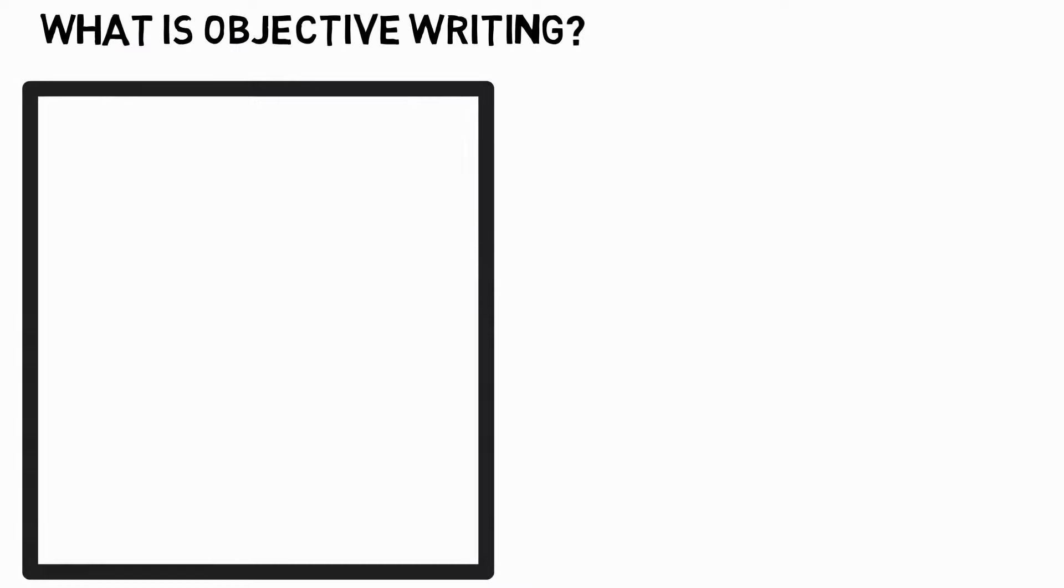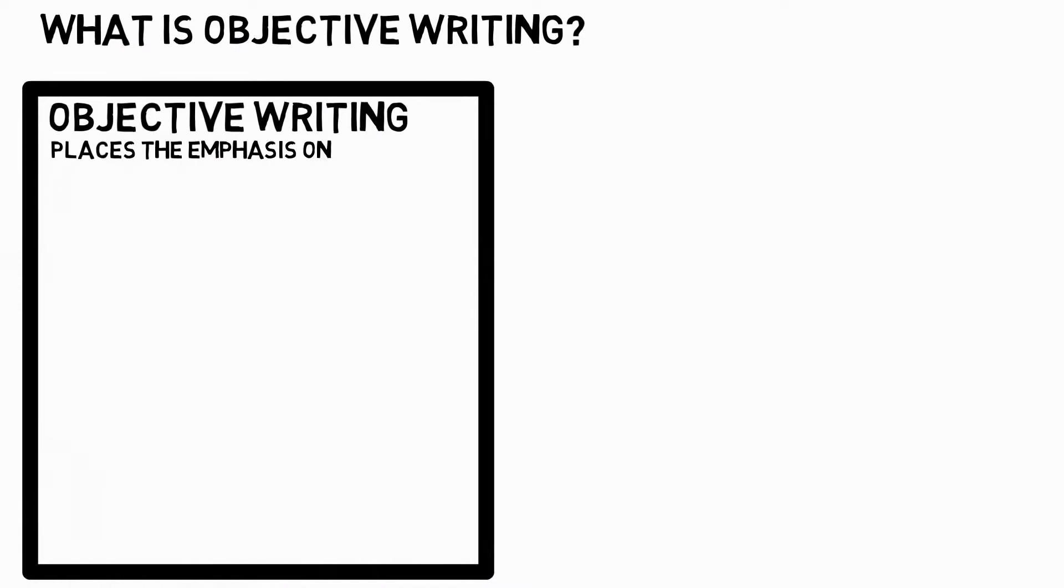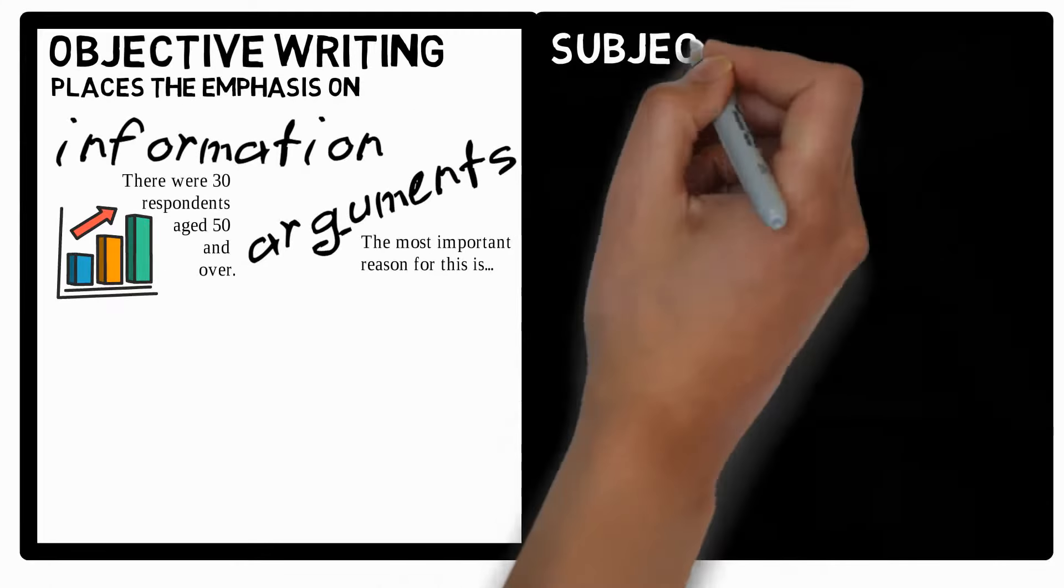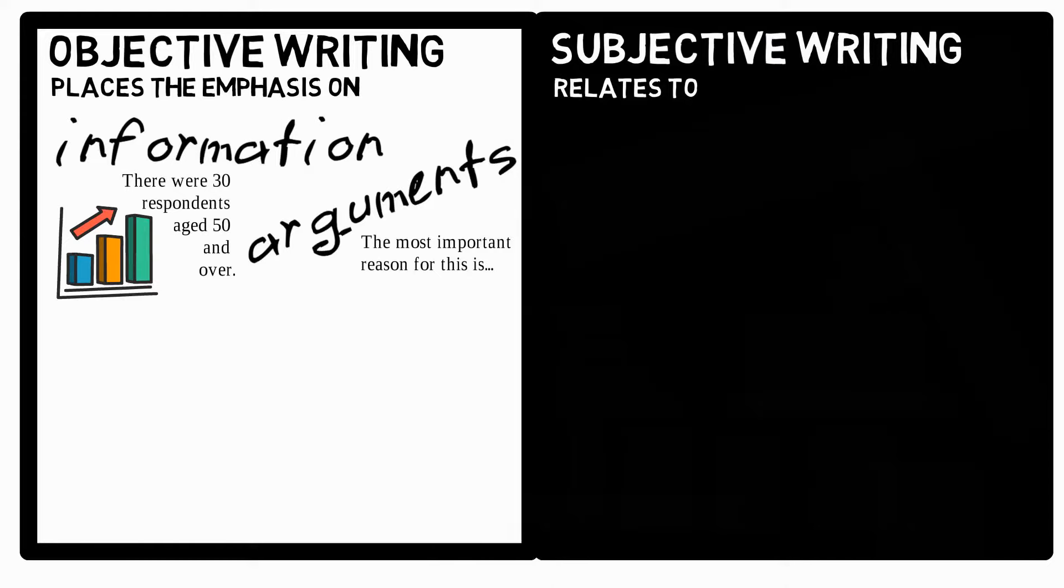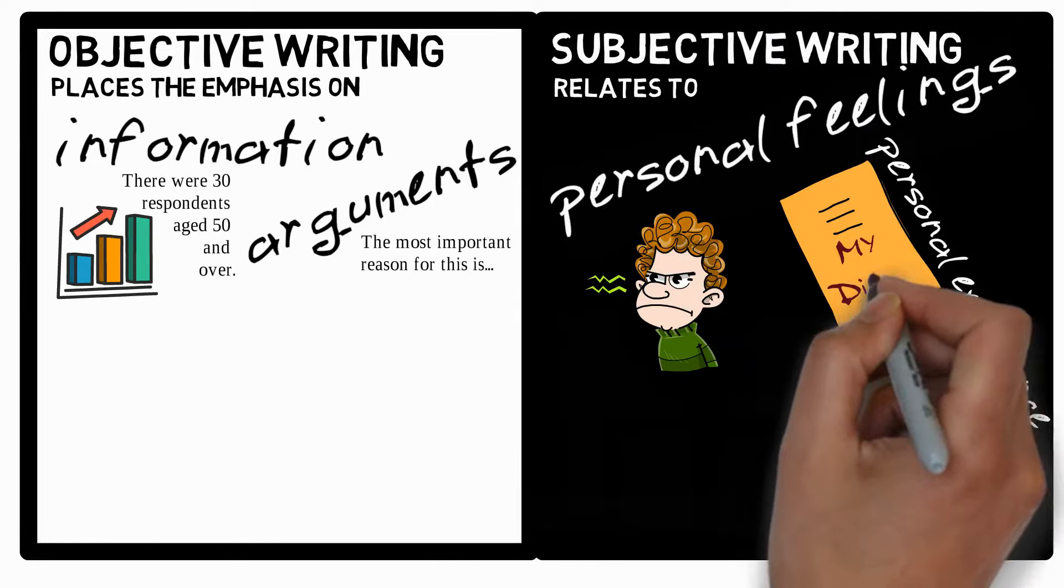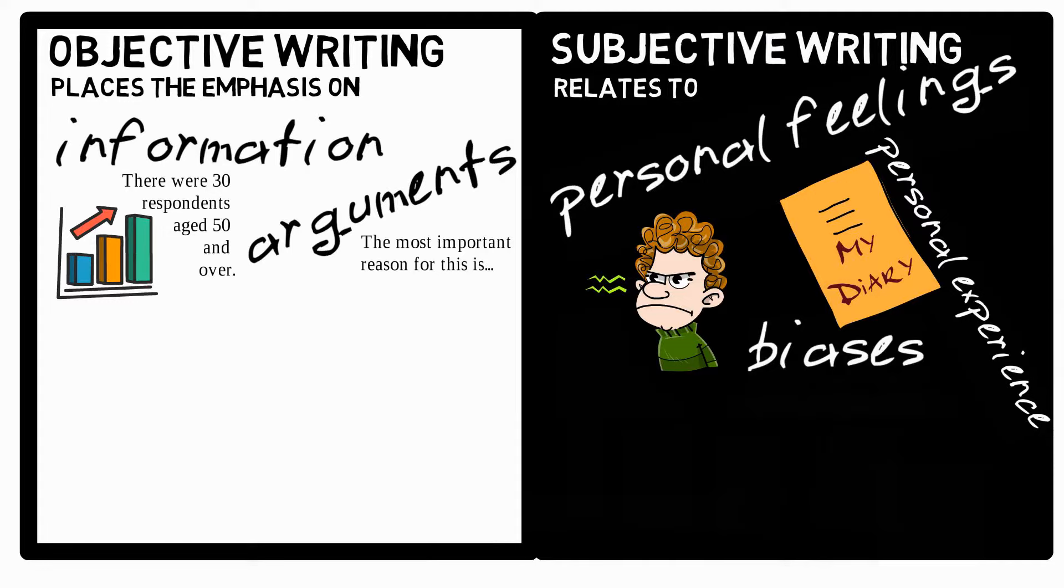Objective writing places the emphasis on information and arguments, and it can be contrasted with subjective writing, which relates to personal feelings, personal experience, and therefore shows your personal biases.